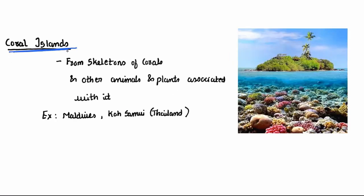The first type is Coral Islands. Corals are tiny sea animals with hard skeletons. They grow until they break away from the water and come out of the surface. Most of these islands you can find near Indonesia. Most of them are Coral Islands.